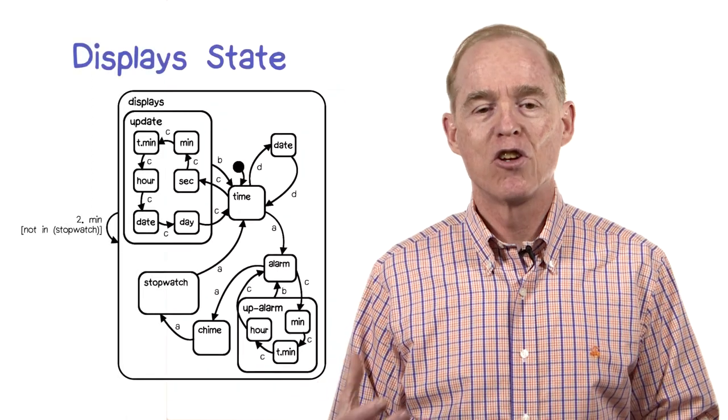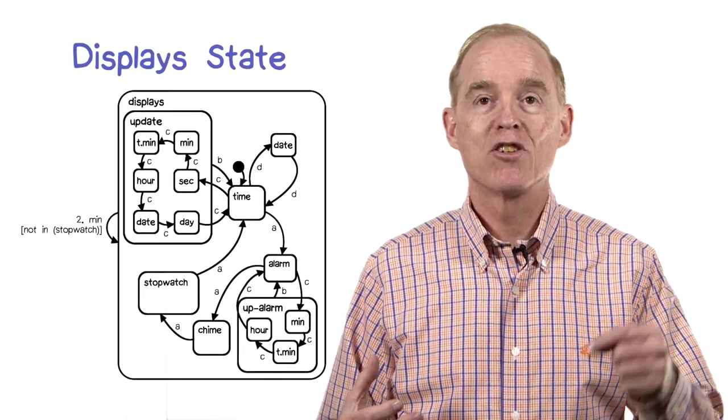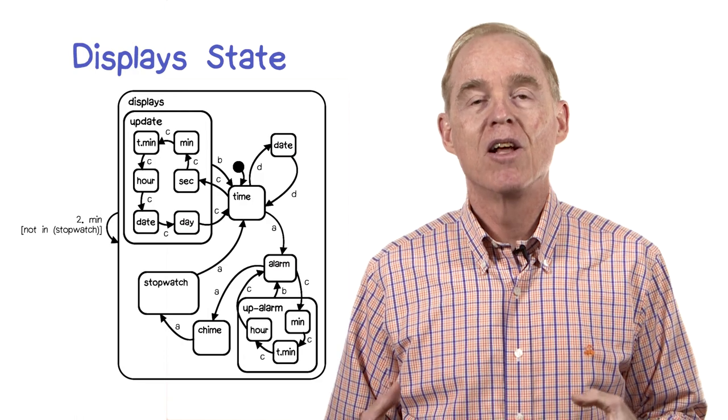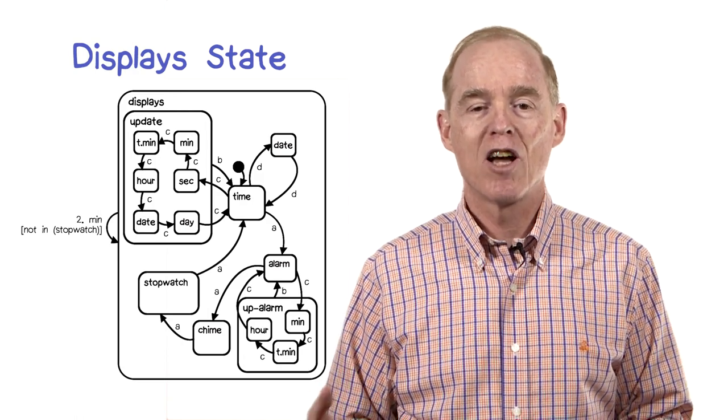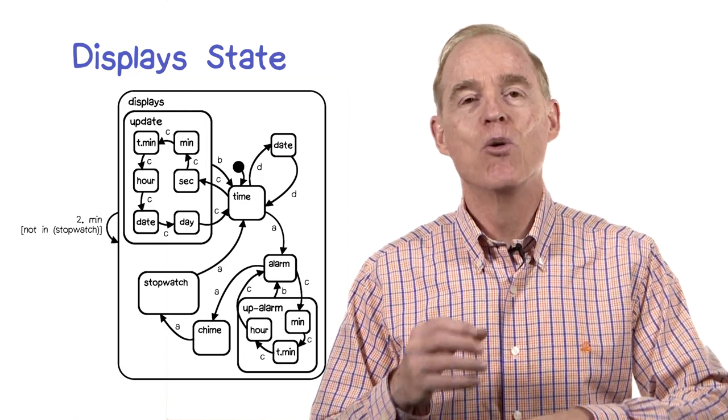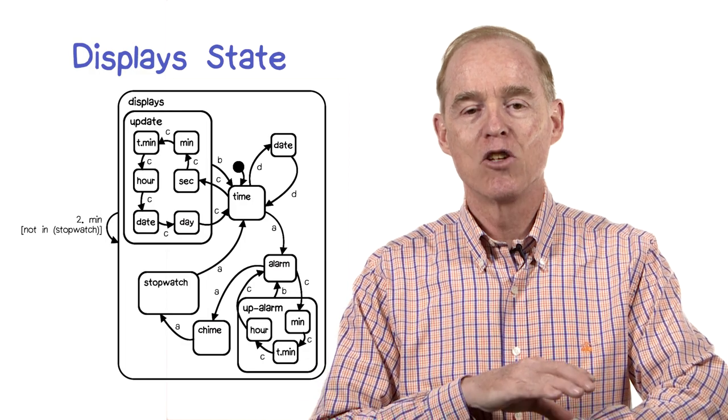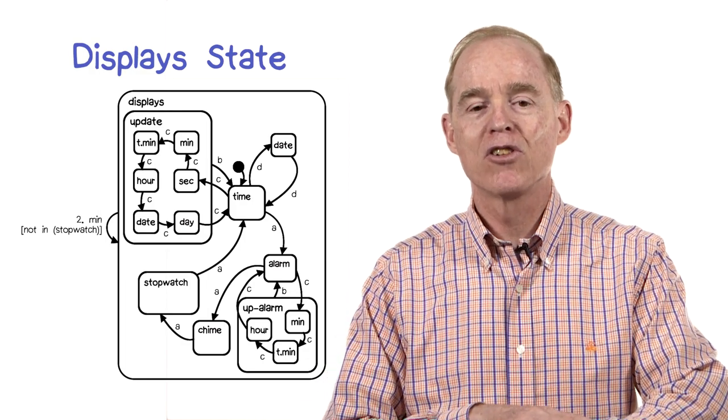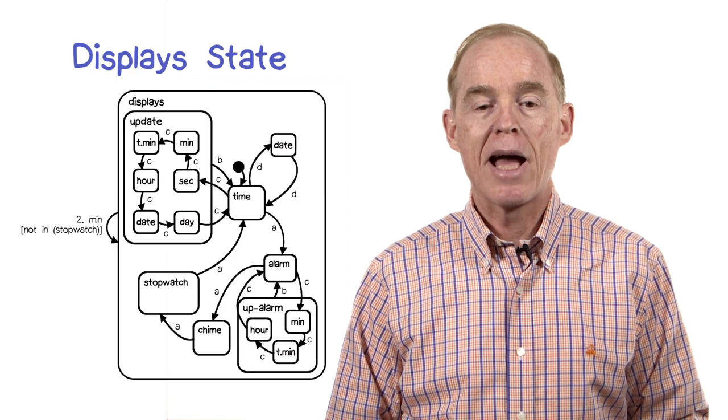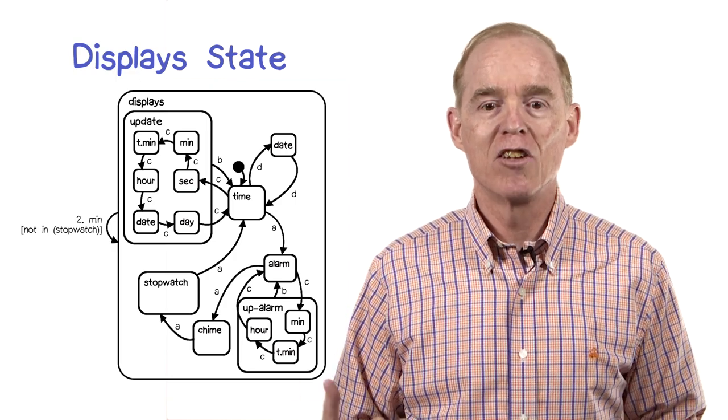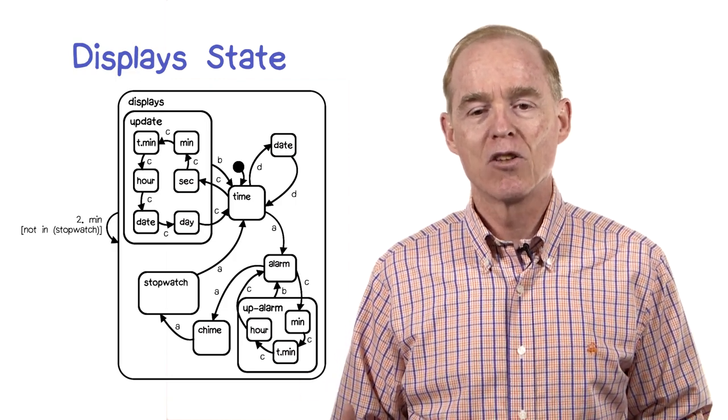Here's a pull out on the display state. Notice that the state itself has a self-transition over on the left. That indicates there's a two minute timer. What this is saying is if you were in one of the display states other than the default state, after two minutes it will flip back unless you were in the stopwatch state, in which case it will keep you looking at the stopwatch.